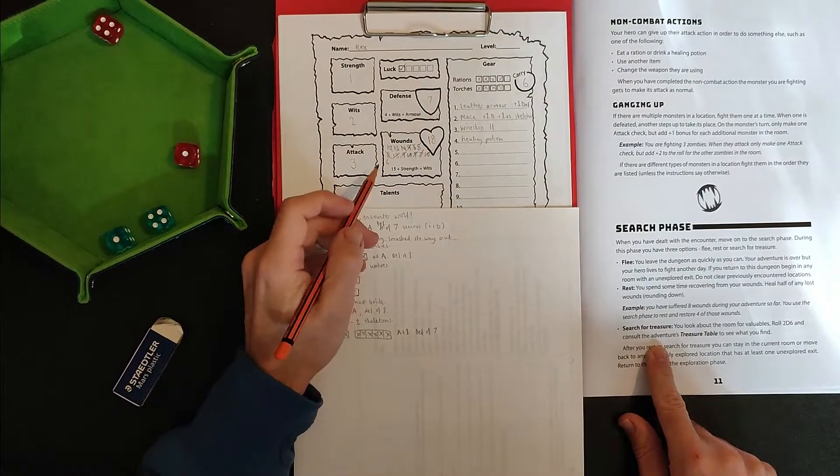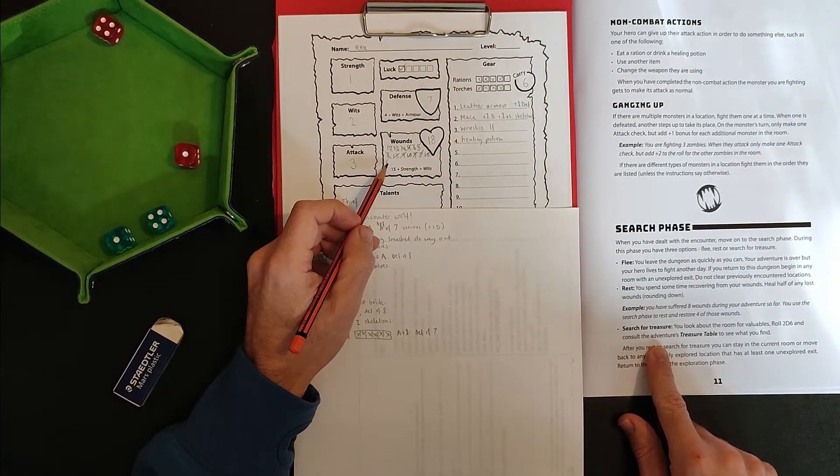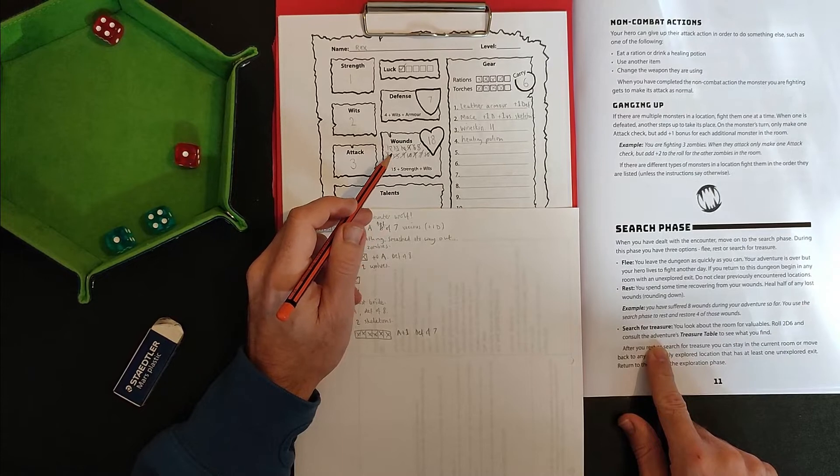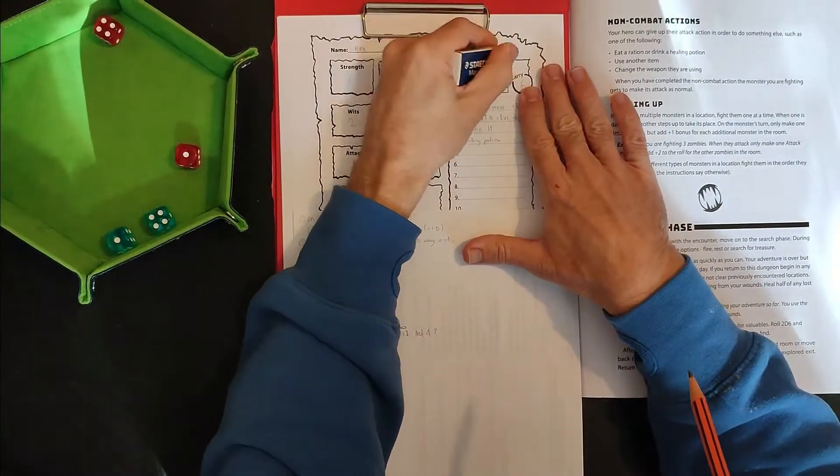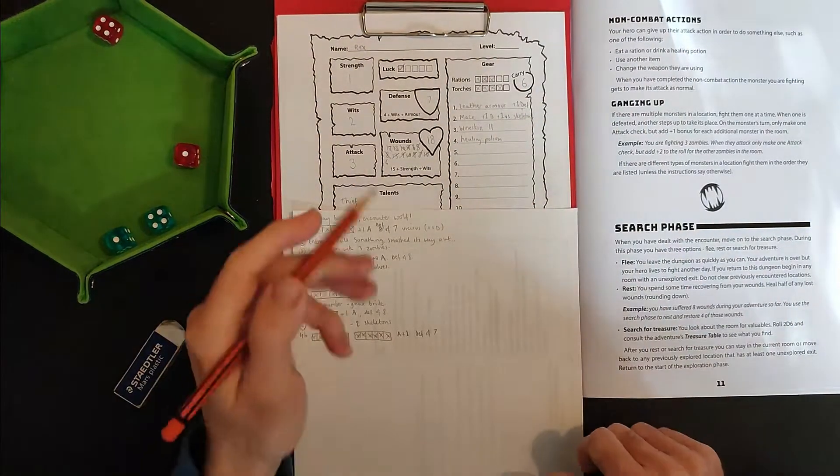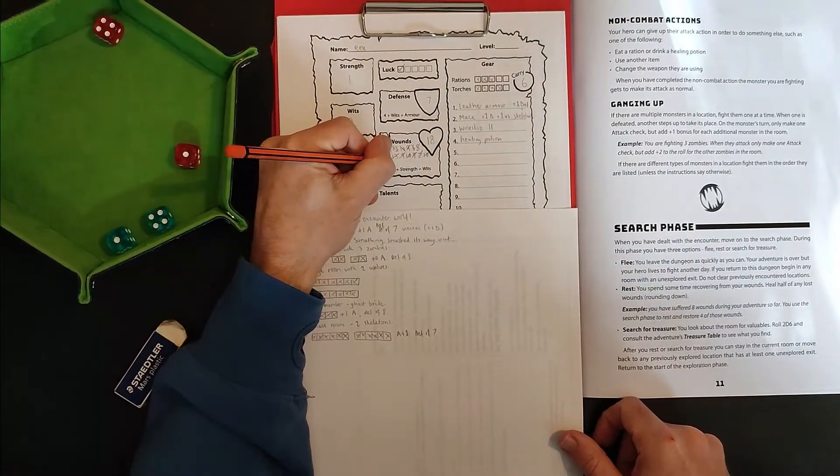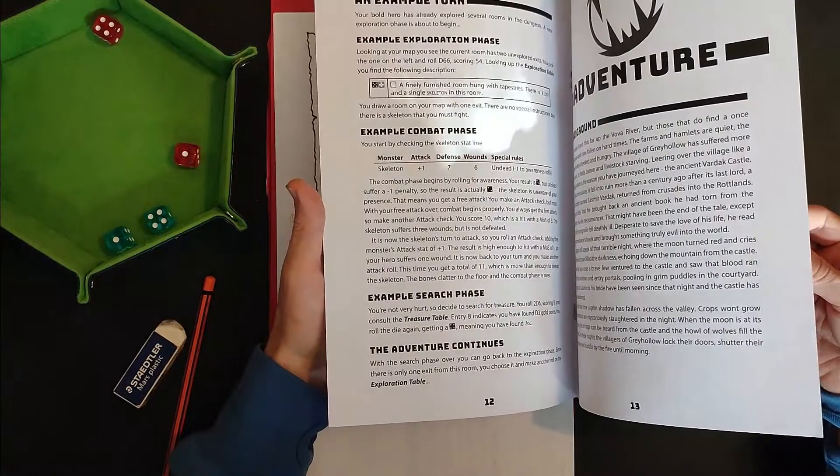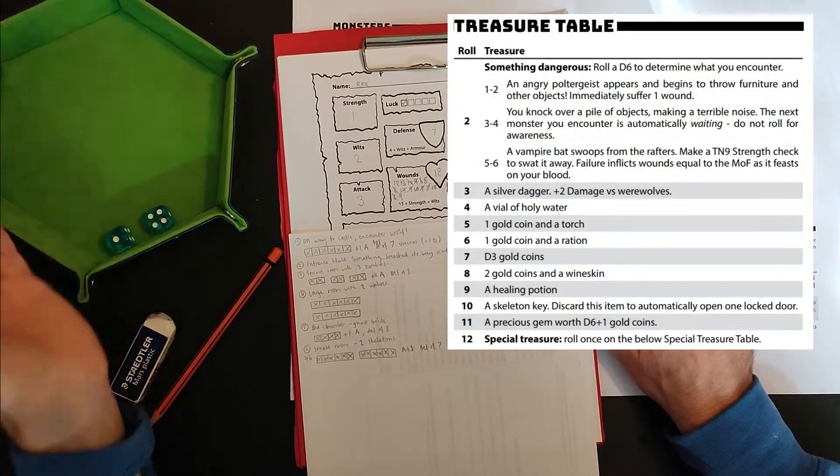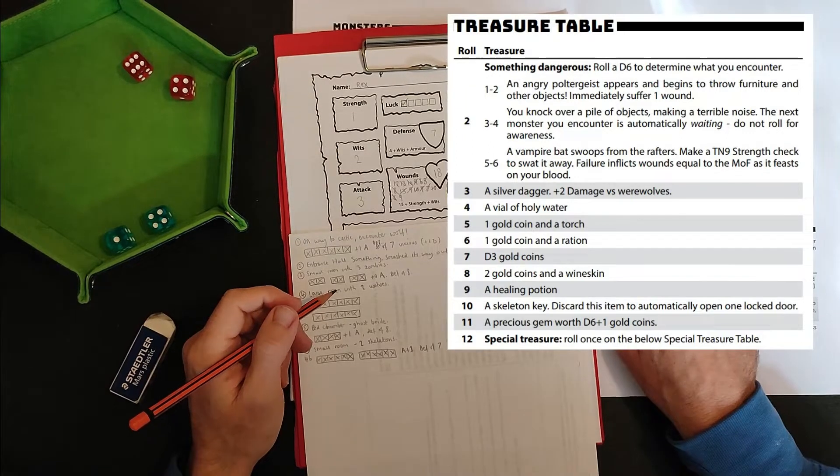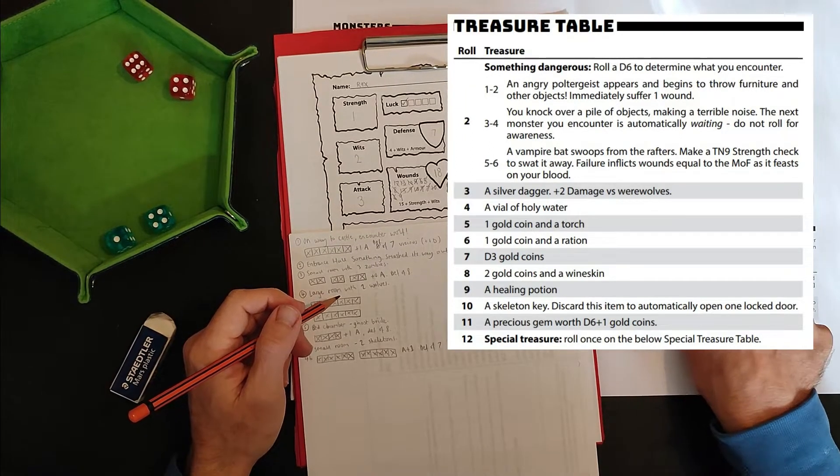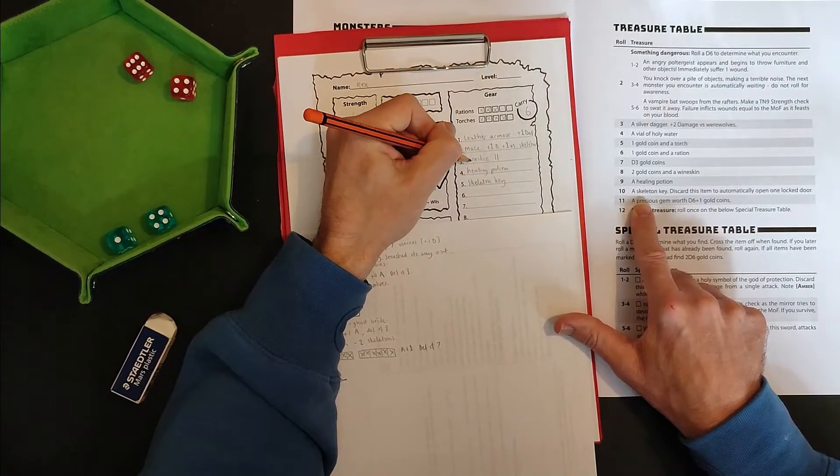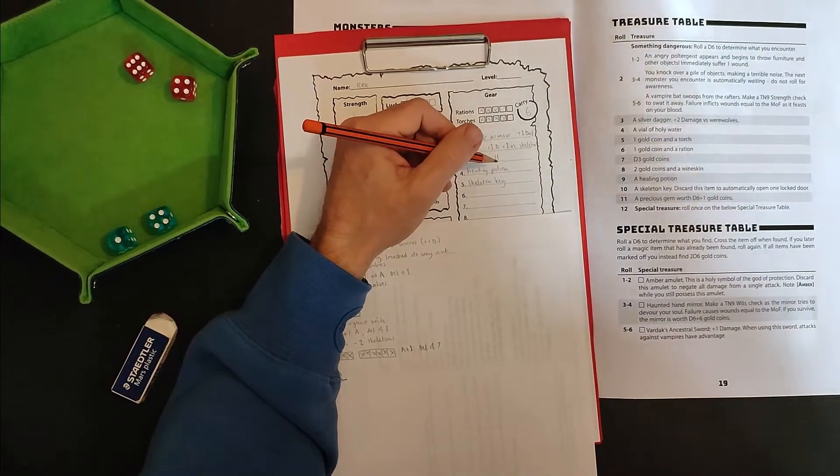Okay. So now I need to decide if I'm going to rest or search for treasure. I'm only on six, which means that if I rested, my depleted wound total is 12, which means I would regain six wounds. Okay. I think I'm going to use a ration. I'm not sure if this is the best way to go about things, but there we go. Use a ration to go up to nine wounds and then roll on the treasure table. Six, seven, eight, nine, 10. A skeleton key. Discard this item to automatically open one locked door. Okay. Well, I guess that's cool. One, two, three, four, five, six. That's the maximum number of things I can carry. So I should probably think about using one of my wine skins. I've got a healing potion as well.